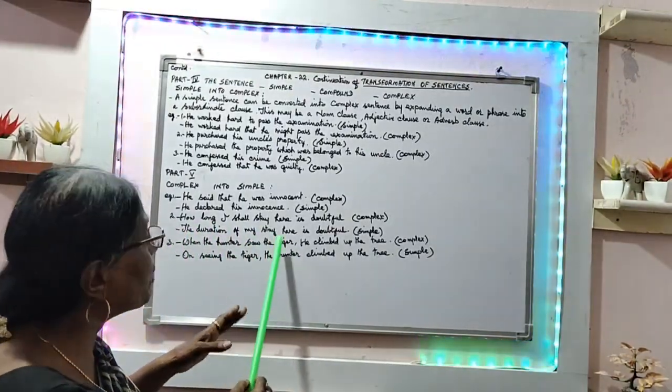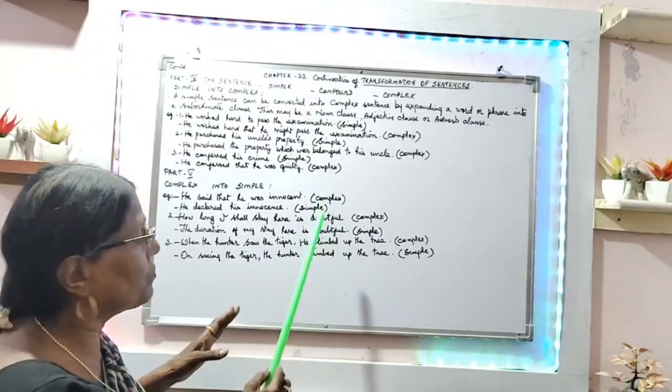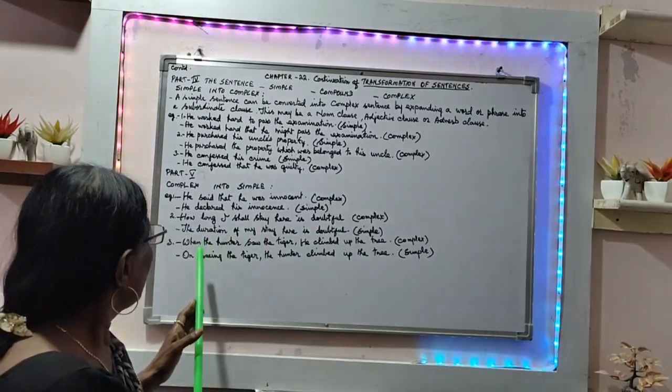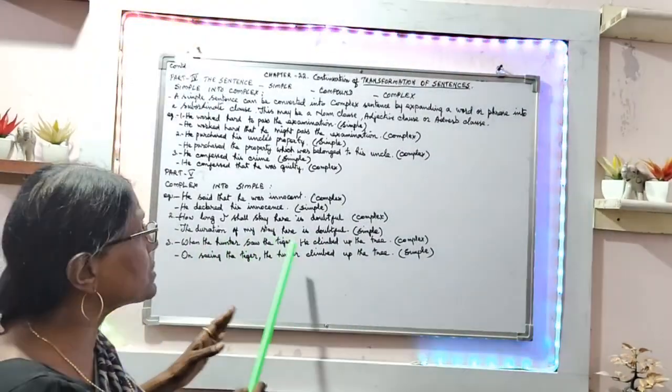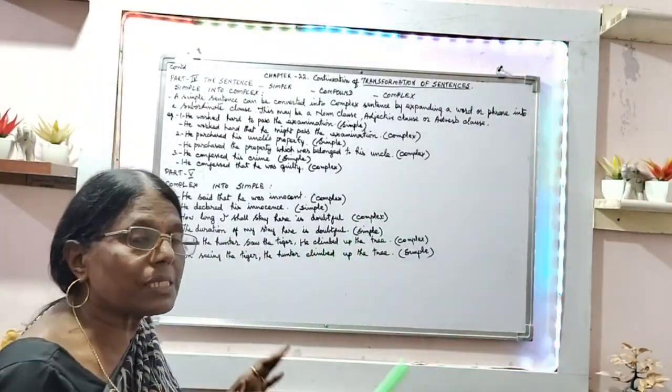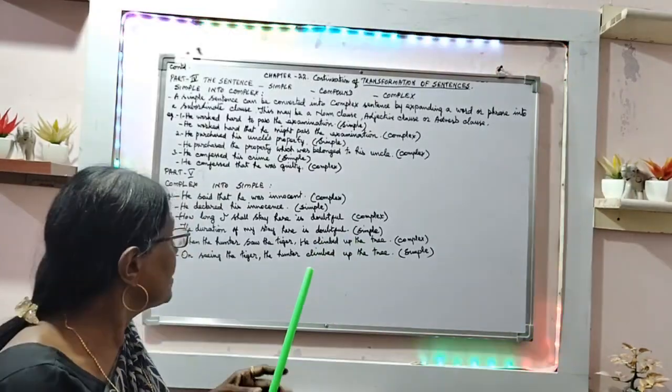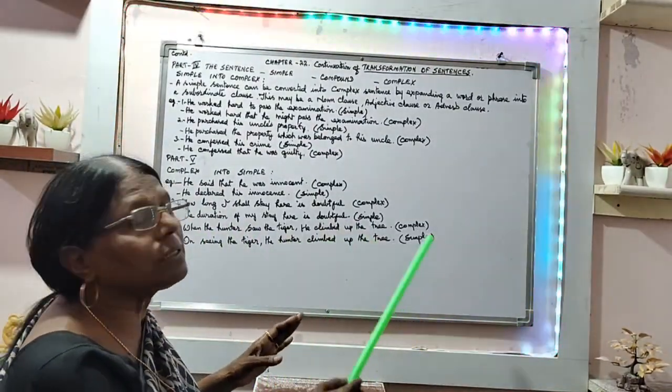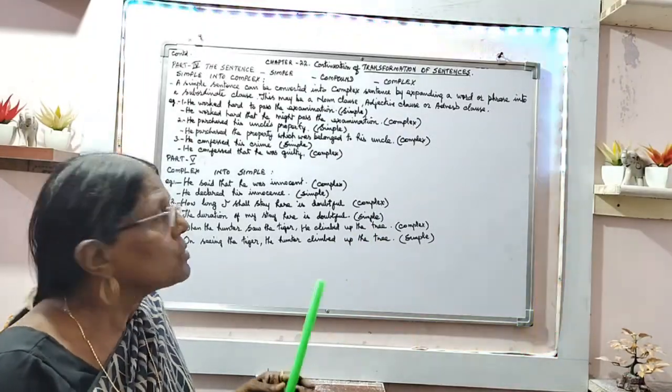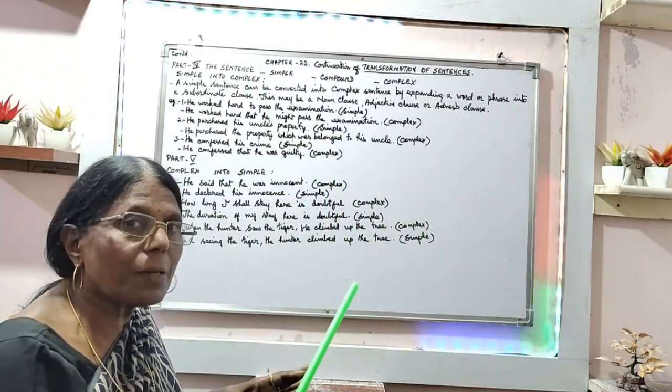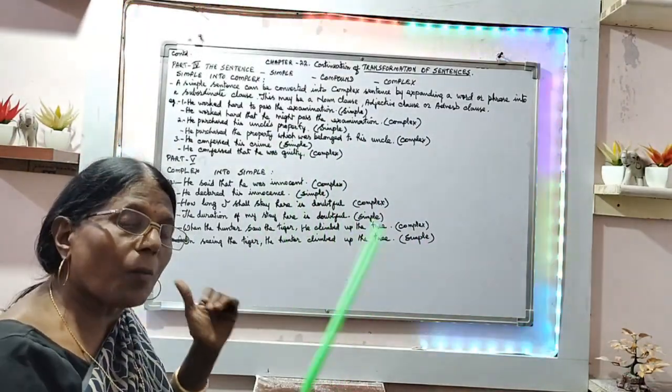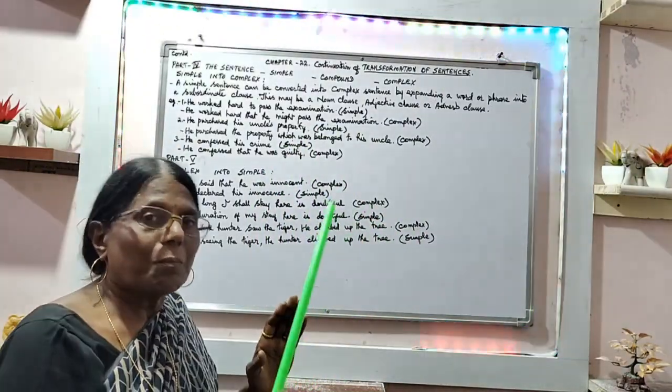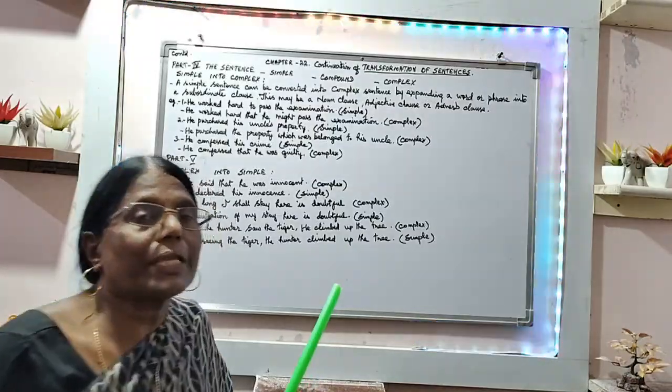'The duration of my stay here is doubtful' is simple. Last example: 'When the hunter saw the tiger, he climbed up the tree' is complex. 'On seeing the tiger, the hunter climbed up the tree' is simple. This video concludes here. Complex to compound sentences will be given next. Thank you.